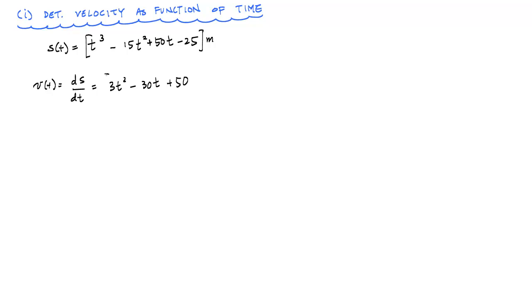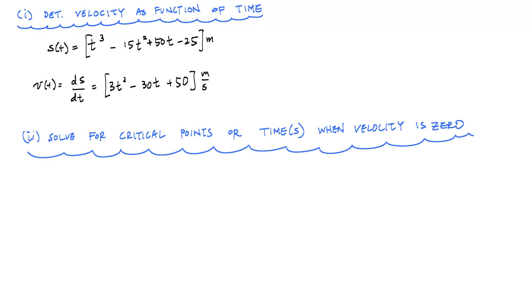The next thing we're going to want to do is determine the critical points, or the times when the velocity is equal to zero, because that tells us when the particle changes direction. That simply involves setting the velocity equal to zero and solving for time.